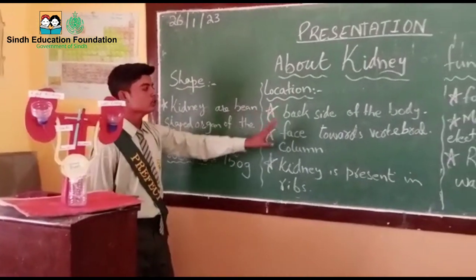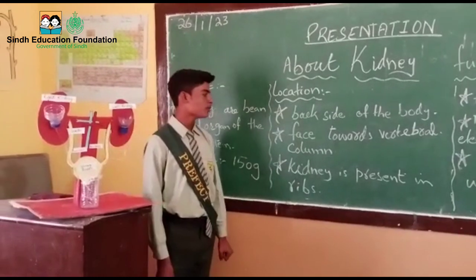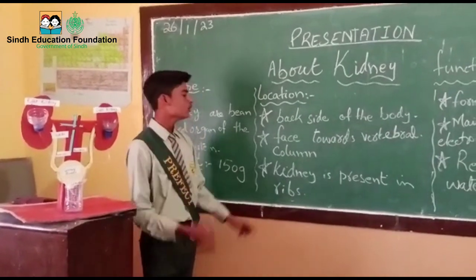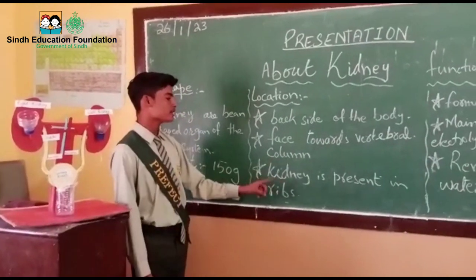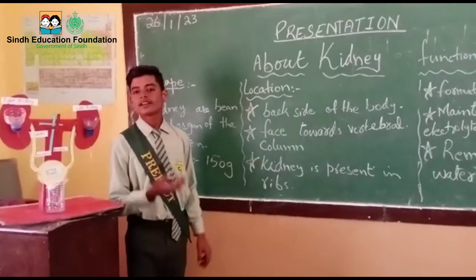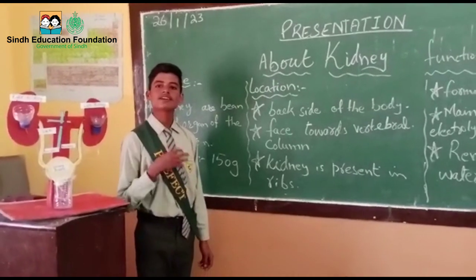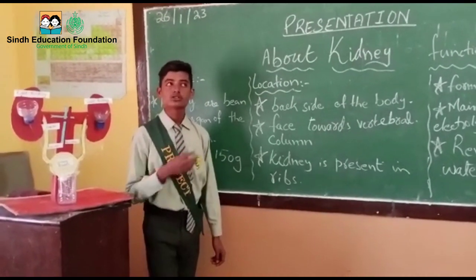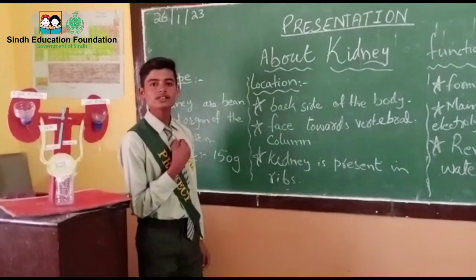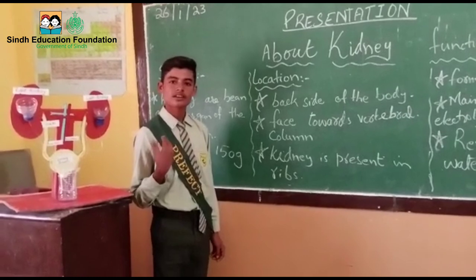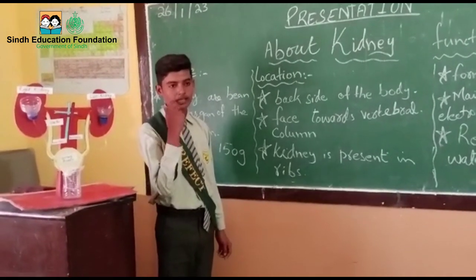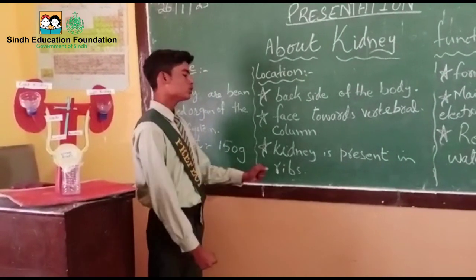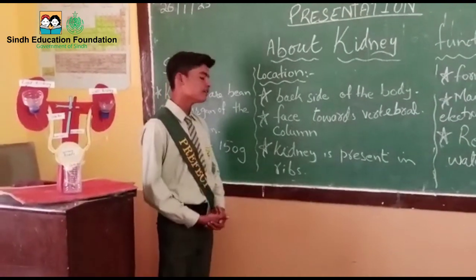The location of the kidney is the back side of the body. The first part is the multiple columns — the right side and the left side. The kidney is present in the ribs.